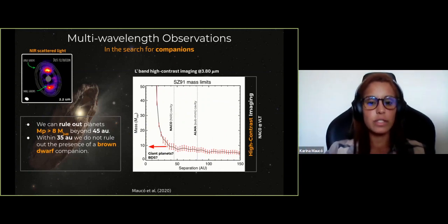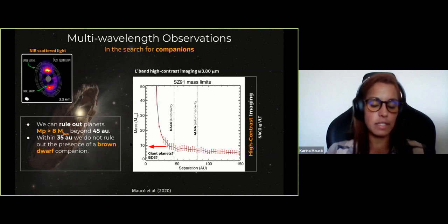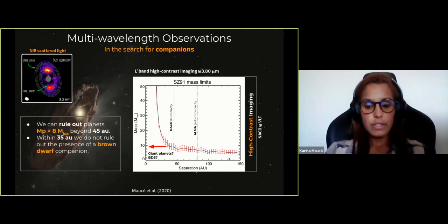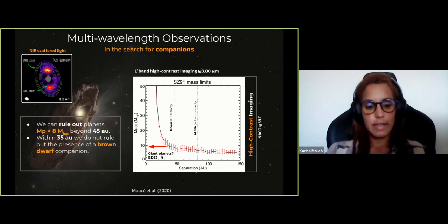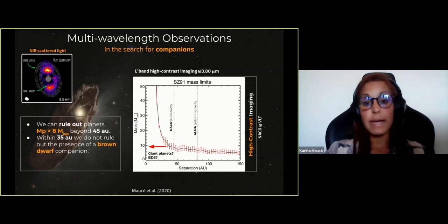Given this large cavity, we searched for companions inside it. We observed the source in L-band at 3.8 microns using NACO at the VLT with high-contrast imaging. Unfortunately, we did not detect any significant point source, but we used these observations to estimate mass sensitivity limits. We can rule out massive planets greater than 8 Jupiter masses beyond 45 AU. However, for inner regions within 35 AU, our sensitivity constraints are not sufficient to rule out a binary system, brown dwarf, or giant planet.